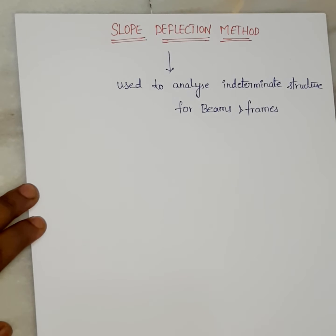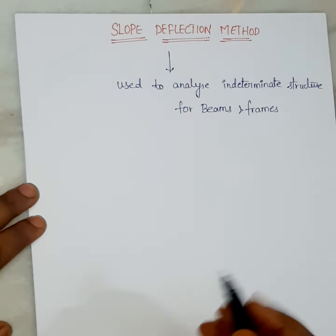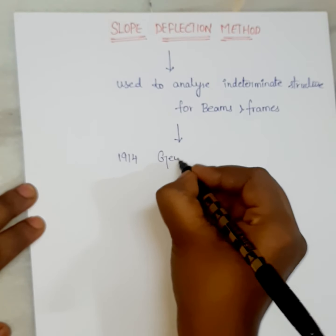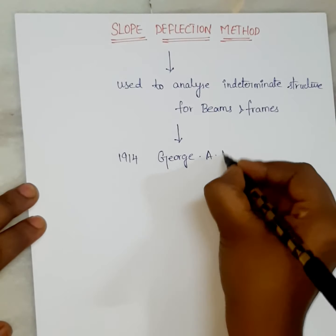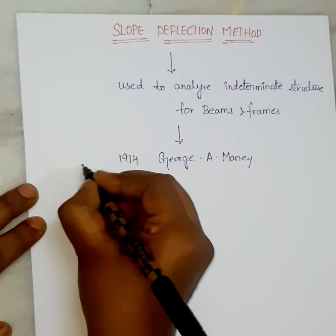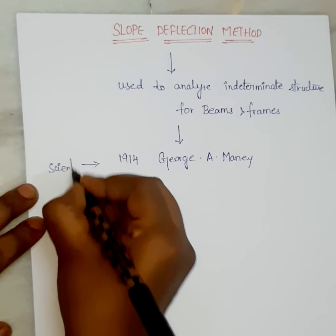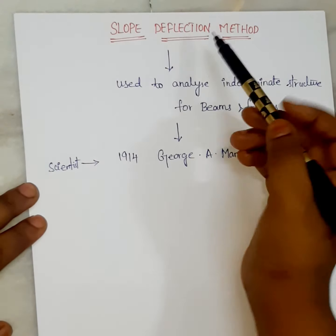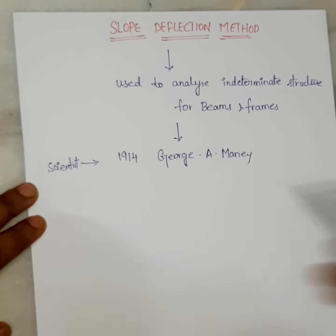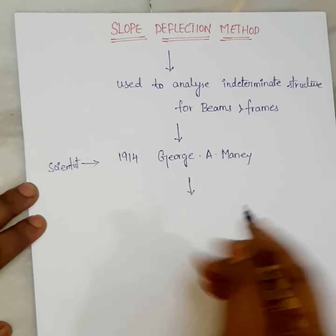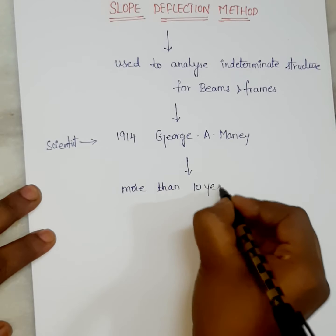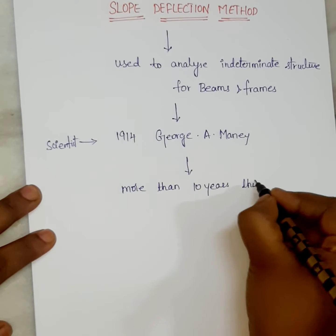The slope deflection method was first introduced in 1914. Georg A. Maney is the scientist who introduced the slope deflection method in 1914. This method was used for more than 10 years.